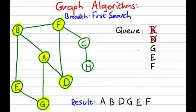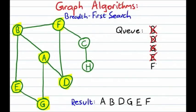We go back to the queue, which takes us to G. From G, there's also no place new to go — we've been to both A and E — so we're done with G. We go back to the queue, which takes us to E. From E, there's no place new to go either, so we're done with E. We come back to the queue to decide where to go next. F, the next vertex in our queue, does have a connected vertex we haven't seen yet: C. So we visit C, mark it as visited, and add it to the queue. Nowhere else to go from F, so we're done with F.